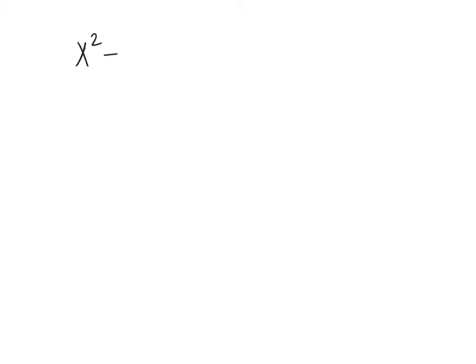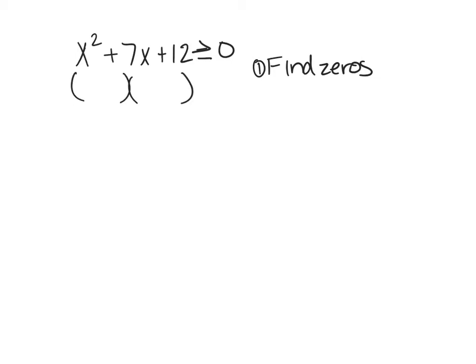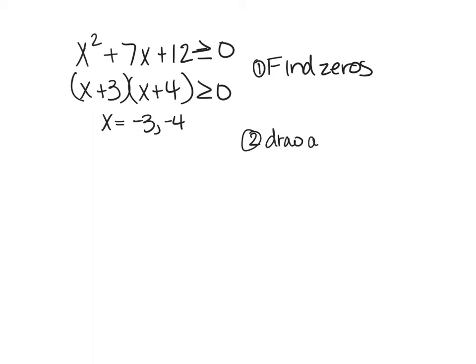Let's do a specific example: solve x² + 7x + 12 ≥ 0. The first thing we're going to do is find the zeros by factoring. What two numbers multiply to 12 and add to 7? That's x + 3 and x + 4. I want to know when that is greater than or equal to zero, so the x-intercepts are negative 3 and negative 4. The second thing is to draw a number line with the x-intercepts on it.